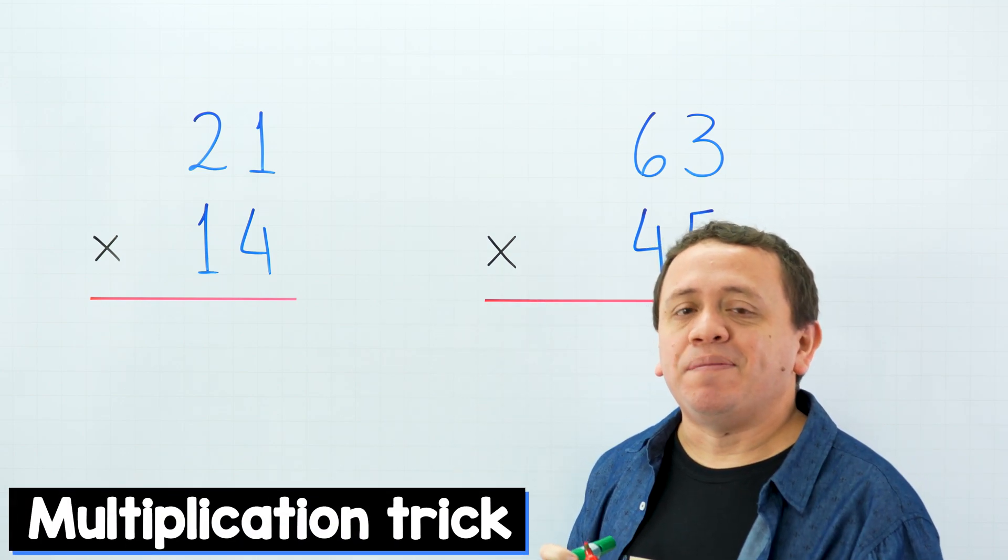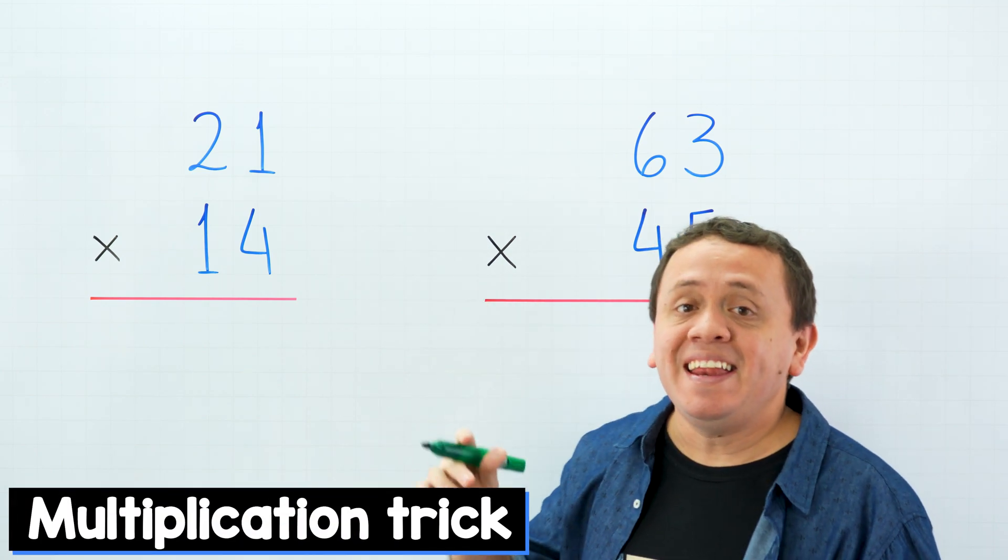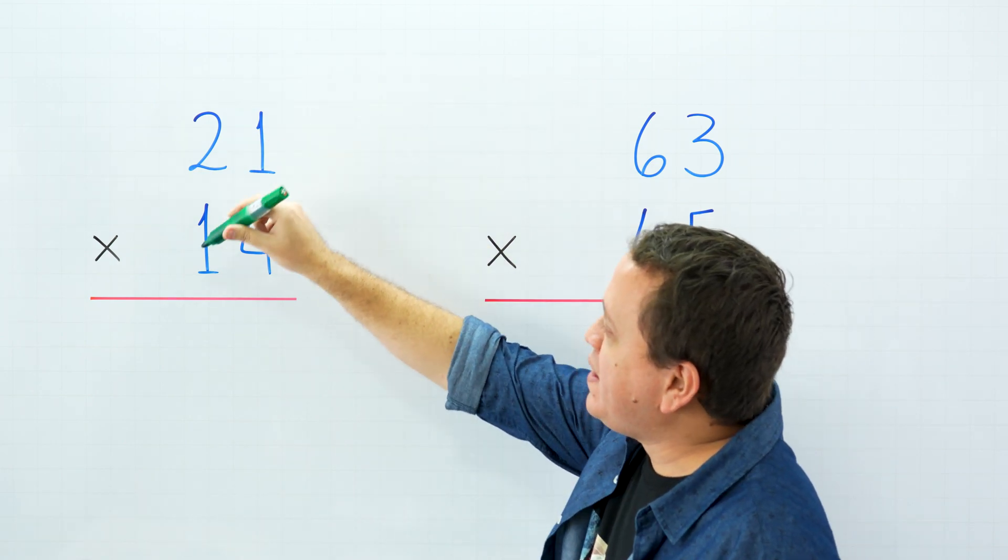Hi! Today I will show you my favorite trick to multiply two two-digit numbers together in a few seconds. In this example, we have 21 times 14.